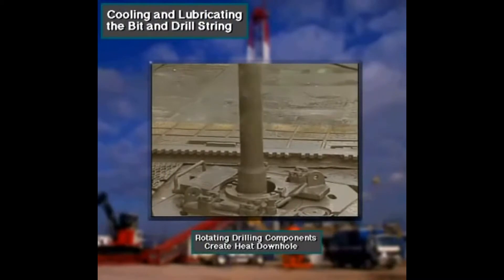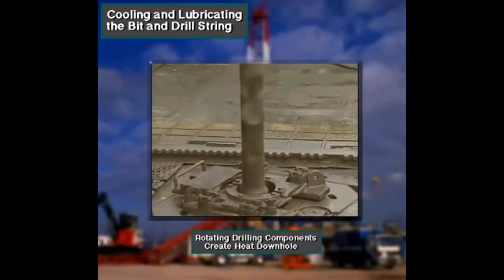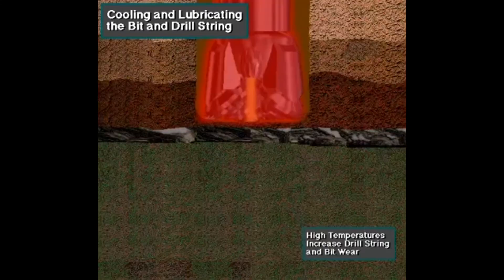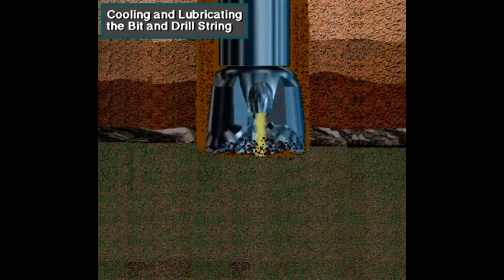Heat is encountered downhole. Deep formations can be very hot, and friction from rotating drilling components generates a lot of heat. High temperatures increase drill string and bit wear. Drilling fluid helps reduce the temperature in the drill string downhole while drilling, and also provides lubrication to the drill string and bit to help prevent wear.